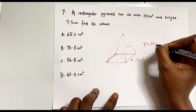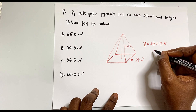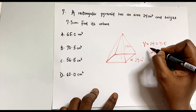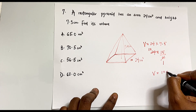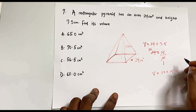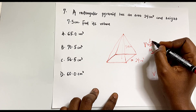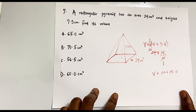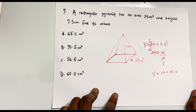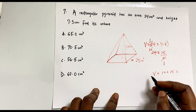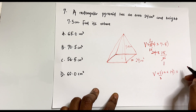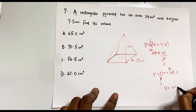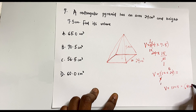Substituting: Volume = 1/3 × 24 × 7.5 = 1/3 × 24 × 15/2. The 2 cancels with 24 to give 12, and the 3 cancels with 15 to give 5. So Volume = 12 × 5 = 60 centimeters cubed, which is option D.